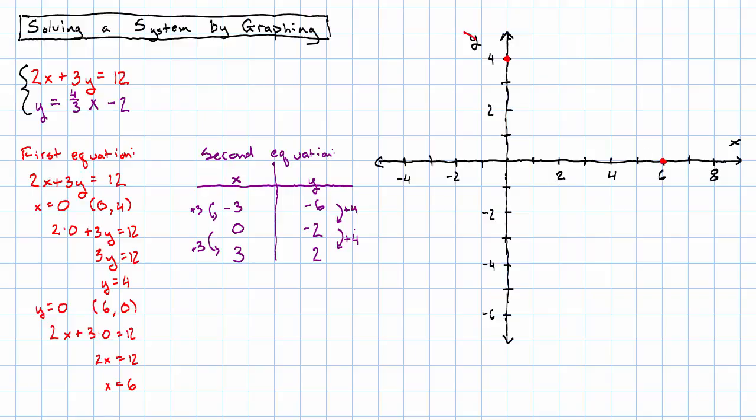Fill in that line. Second equation has y-intercept negative 2 and slope 4 thirds. So, that means I go over 3, up 4.